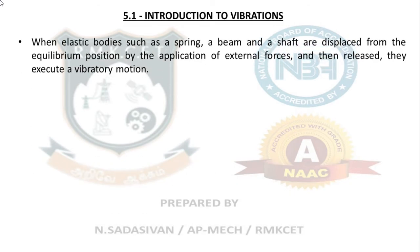When an elastic body such as a spring, a beam, or a shaft is displaced from the equilibrium position by application of an external force and then released, they execute vibratory motion. This is a somewhat crude definition of free vibration. What is a free vibration? You just pull it and then release it. After releasing, you do not touch the body — it keeps vibrating on itself.